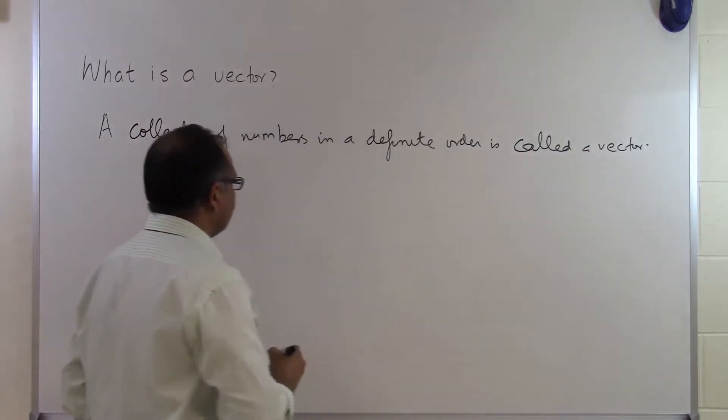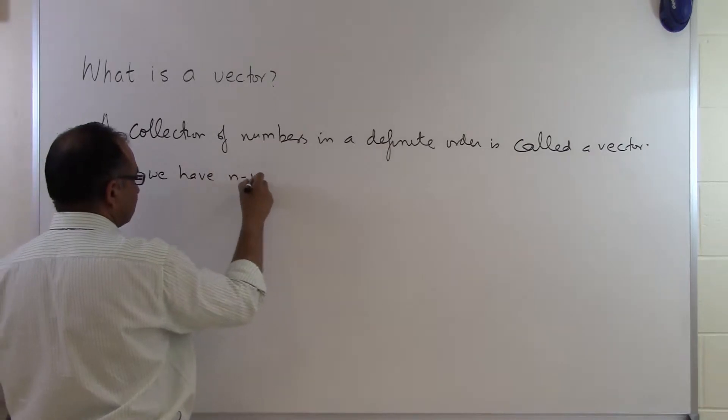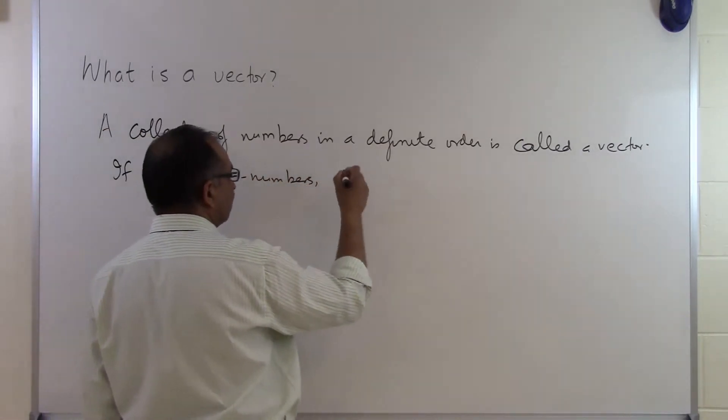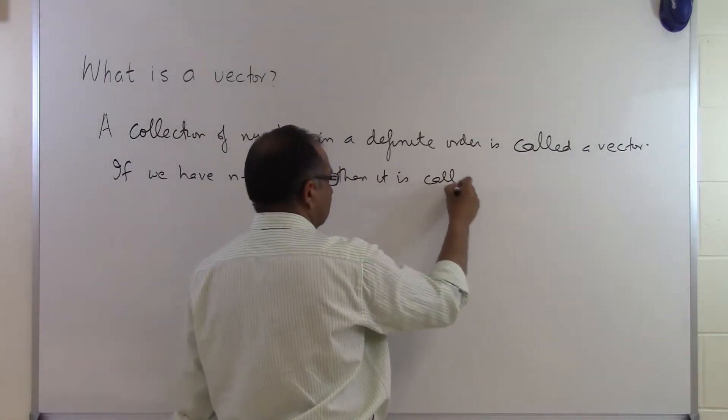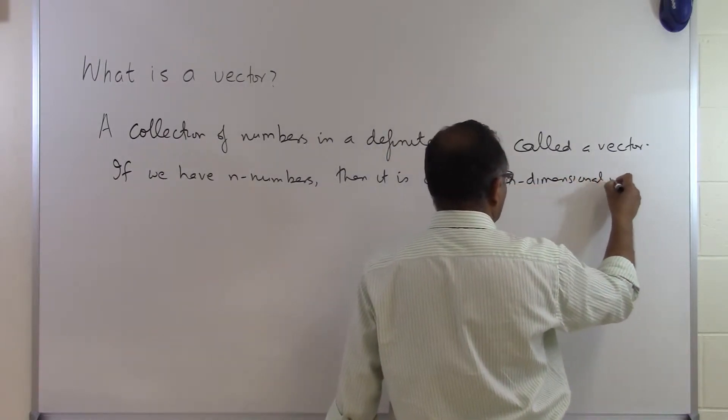So if we have n numbers, then it is called an n-dimensional vector.